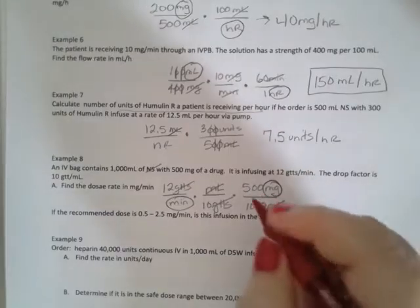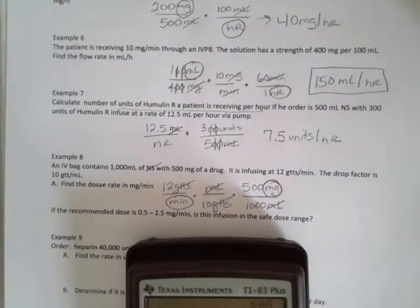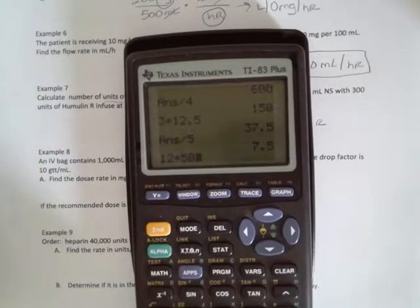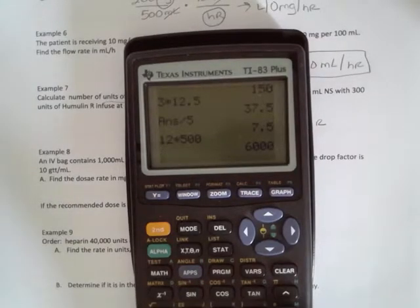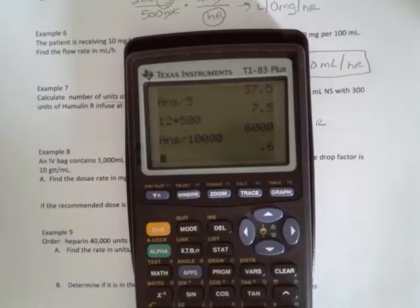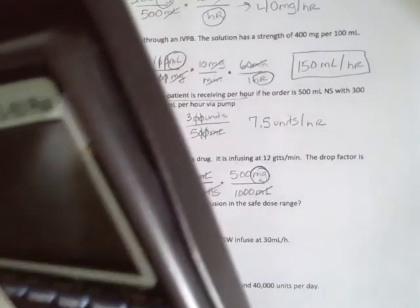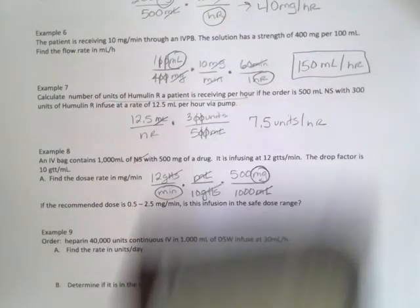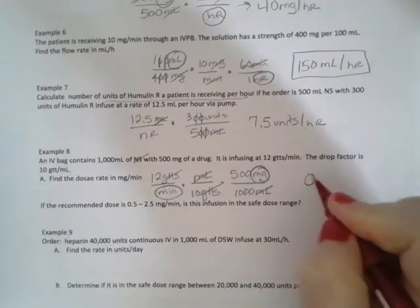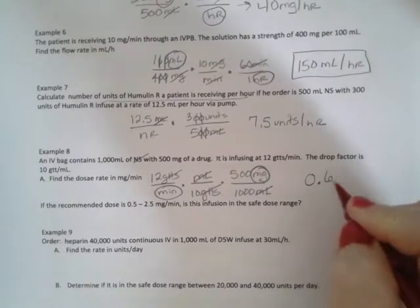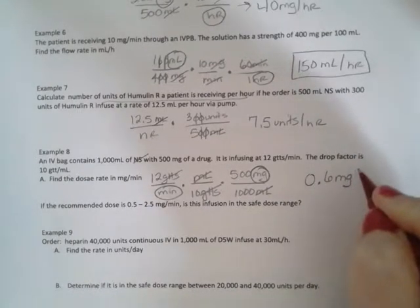I'm going to take 12 times 500, divide that by 1000 times 10, which is 10,000. My answer is six tenths. But remember, I have to put that leading zero there. In medicine, it's important to put that leading zero there. So 0.6 milligrams per minute.